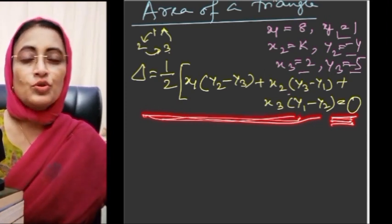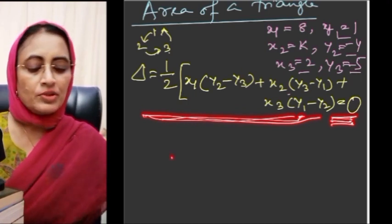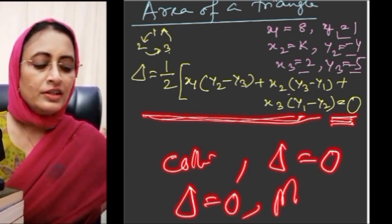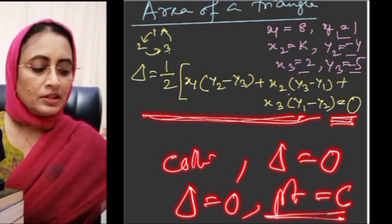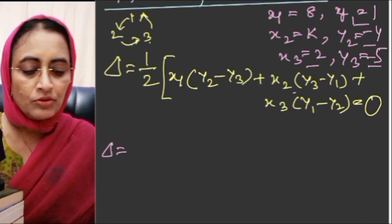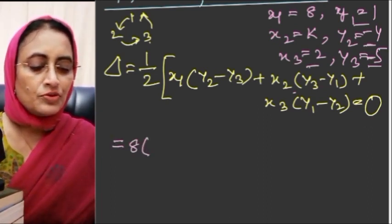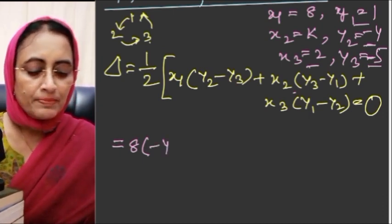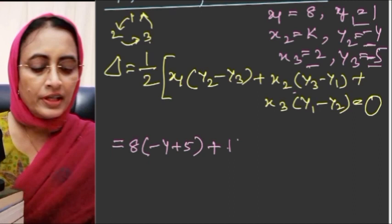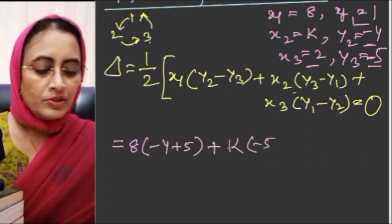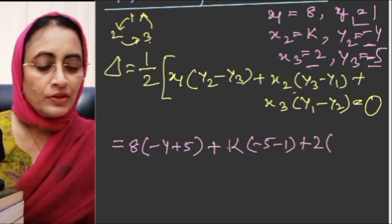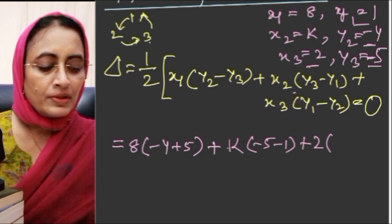Since the points are collinear, triangular area = 0. It is impossible to draw a triangle with collinear points. So putting the values: half into [8(k - (-2)·(-5)) + k·((-5) - 1) + 2·(1 - (-4))] = 0. x1 = 8, y2 = k, and putting all coordinates in.